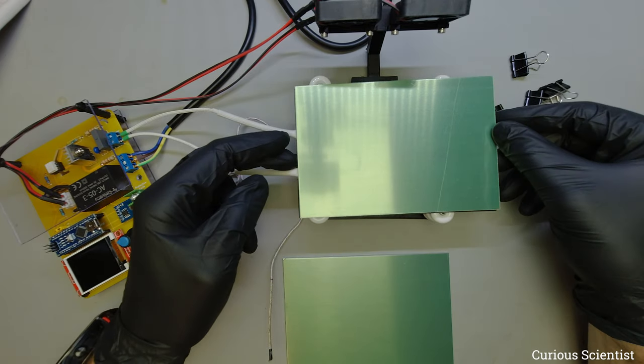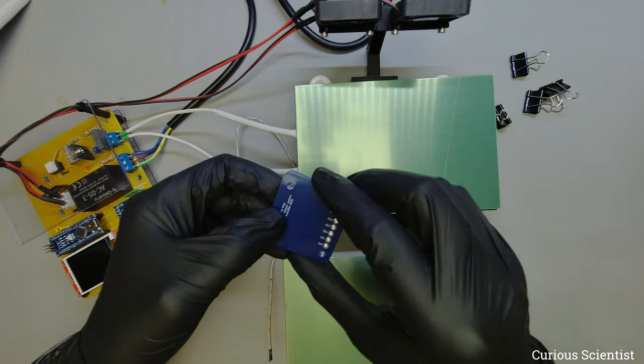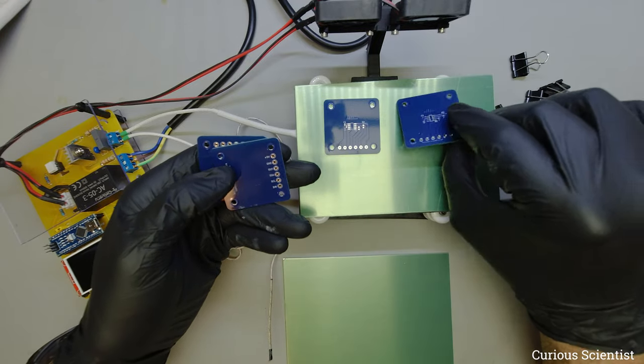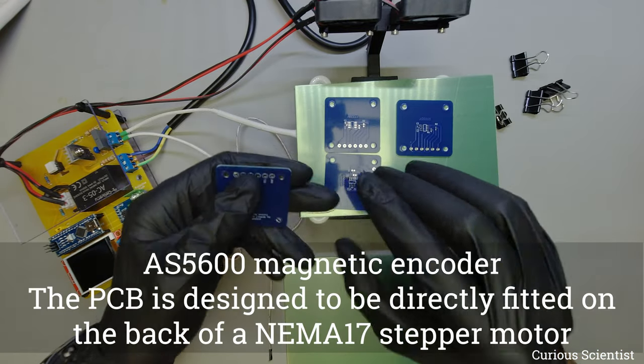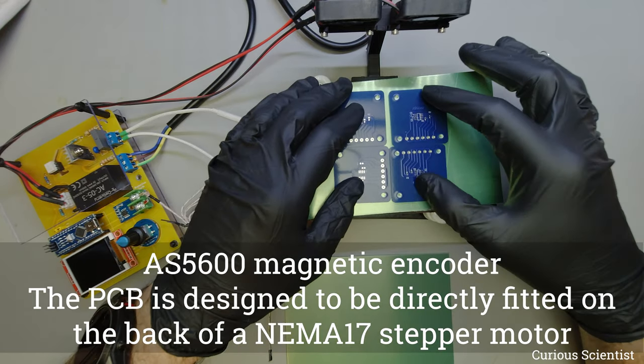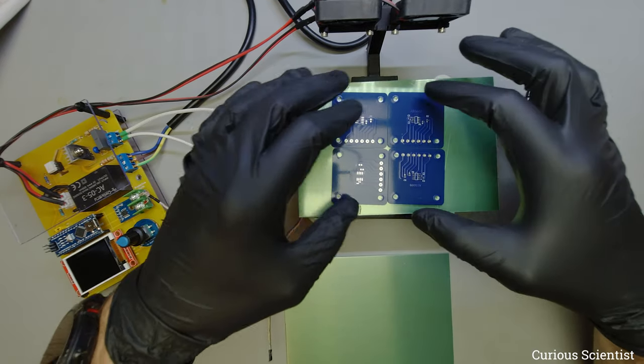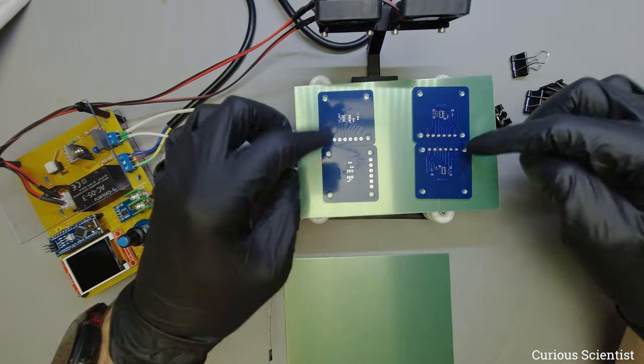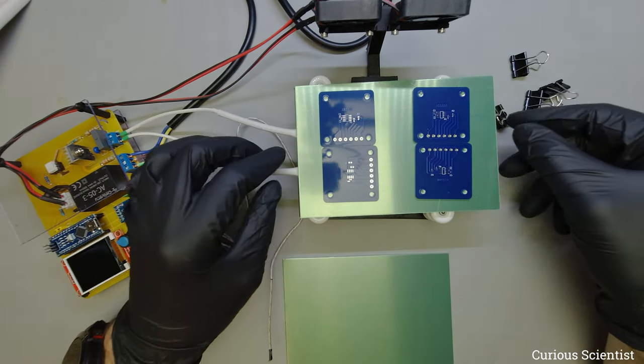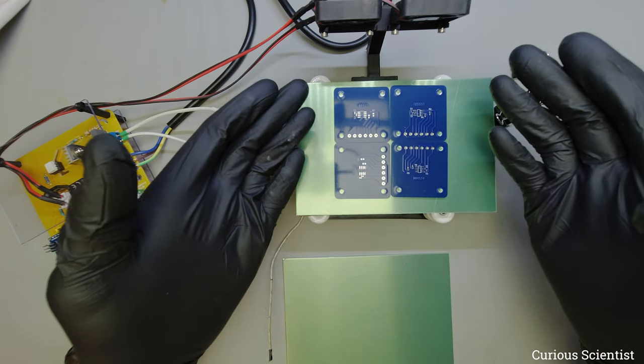How I will test this is I will just use my typical test specimens. I have these PCBs, AS5600 PCBs, so these are my favorite magnetic encoders attached to this PCB. I will align them like this and see how they are soldered, and then we can see if my improvement is really an improvement or just garbage.